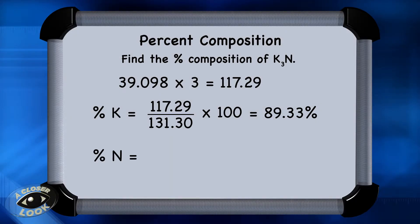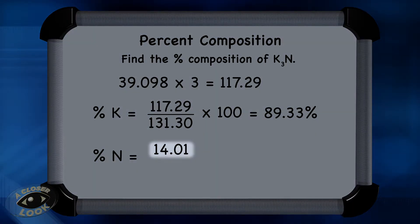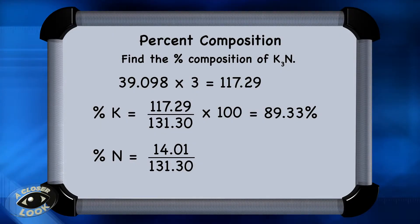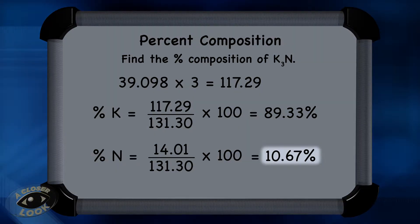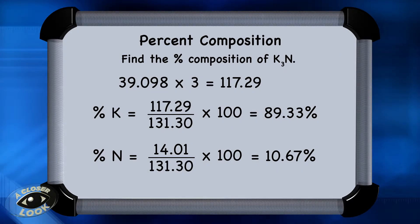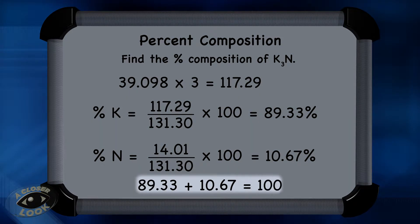To solve for mass percent for the nitrogen, use the same approach as for potassium — put the mass of nitrogen found in the compound in the numerator and divide by the total mass of the compound. Plug in 14.01, the mass of nitrogen from the periodic table. Use one nitrogen, because there was only one in the formula, and divide 14.01 by 131.30. Multiply that times 100, and you find that the mass percent of nitrogen is 10.67. Double-check by confirming the two percentages add up to 100% — and they do, so this example is correct.